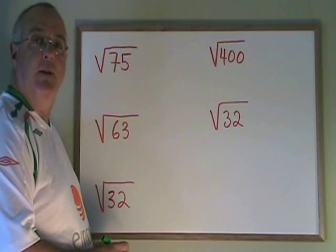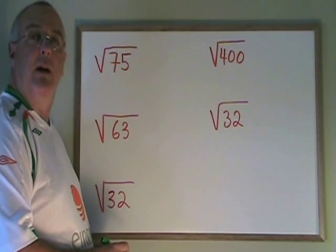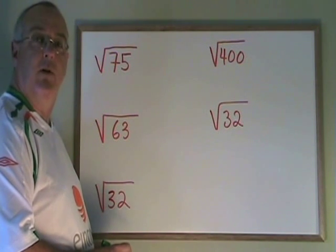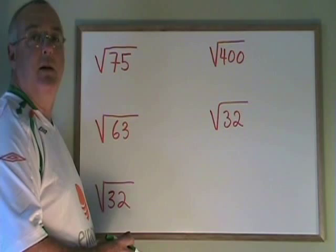75 has the factors 1, 3, 5, 15, 25, and 75. And the largest of those factors that is a square is 25.